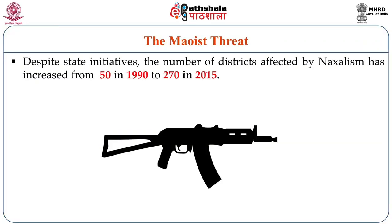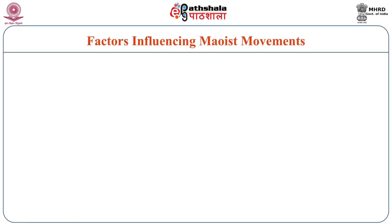Interestingly, despite the state declaring it as a threat and taking many steps to counter Naxalite hegemony, there has been an increase in Naxalite-affected districts in the country. In 1990, there were only 50 districts, but in 2015 the number of districts affected by Naxalism and Maoism had gone up to 270. Obviously, there must be certain reasons for which Naxalites have been able to expand their reach to impoverished tribals and marginalized Dalits. We need to look into these conditions and factors that have given support to the Maoist movement.